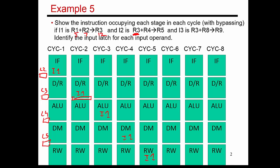Once instruction 1 has read the register file, it knows that the values of R1 and R2 are 5 and 7. Those two values are sitting in latch L3. Once you've performed the math in cycle 3, you've figured out that the sum of those two numbers is 12, and that's sitting in latch L4. In the fourth cycle, that value 12 moves from latch L4 to latch L5.